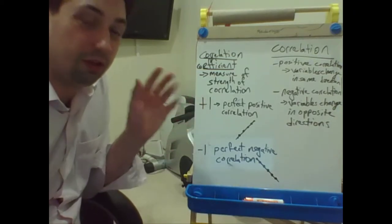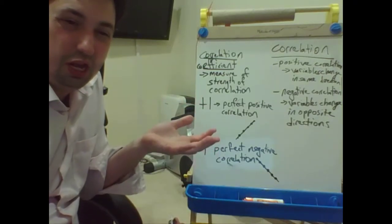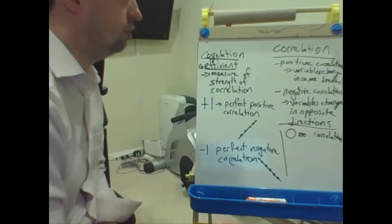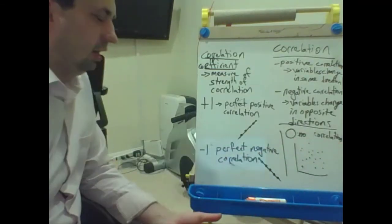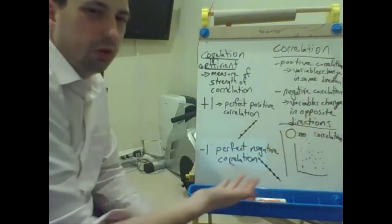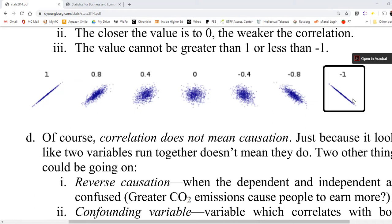Usually in practice, you will never see something that's exactly positive one — if you do, it's pretty boring or you did something weird. Similarly, if you ever see negative one, you probably just did something weird. In practice, there's always going to be something between them. Zero means there's no correlation at all — it's just a mess of points. Here's a picture of the ranges of some correlation coefficients: positive one looks like an upward sloping line, negative one is a downward sloping line, and zero in the middle is just a mess where individual points really don't indicate a correlation.